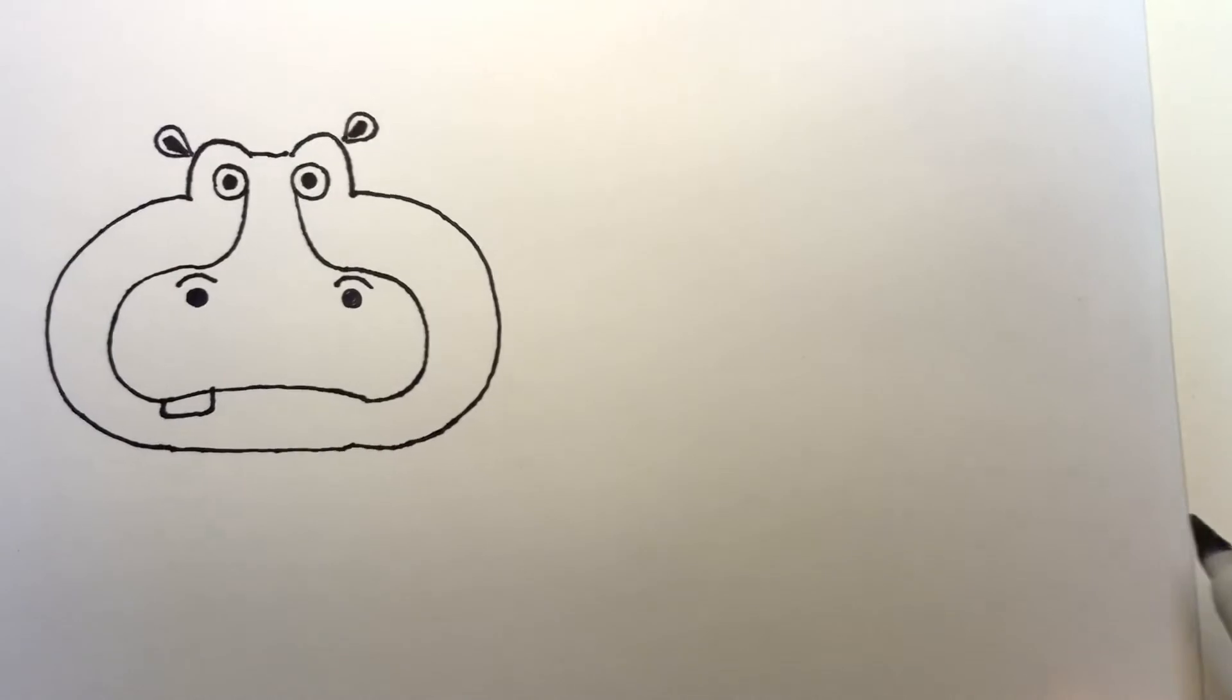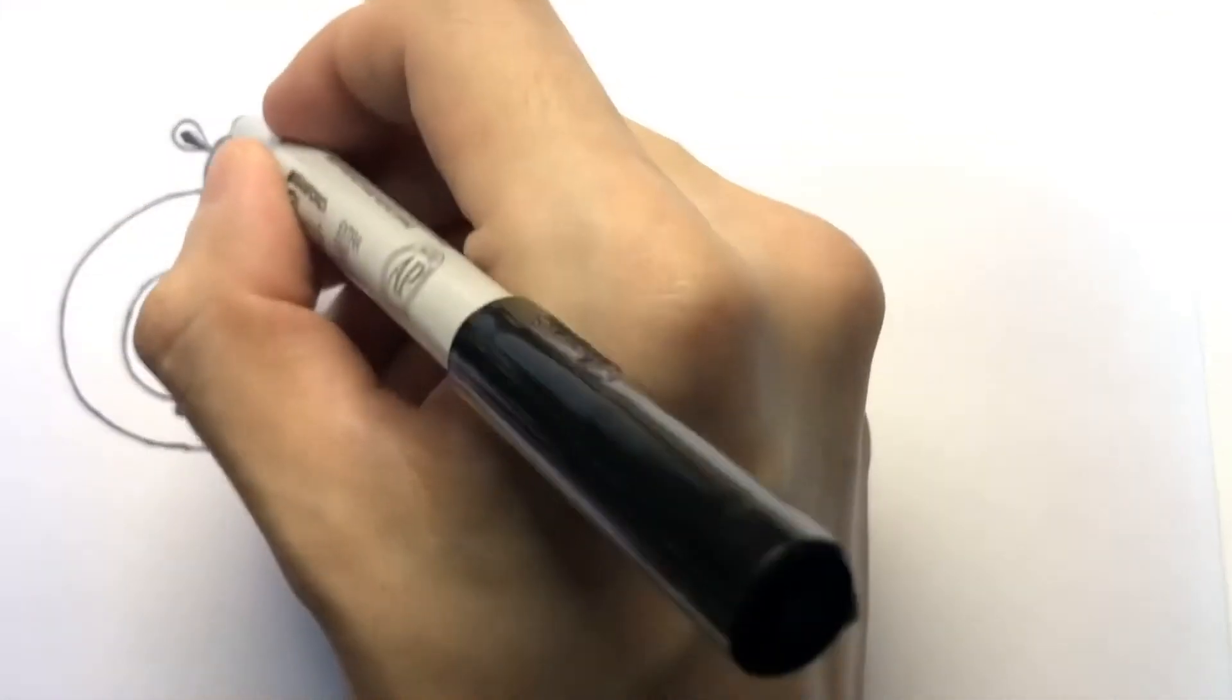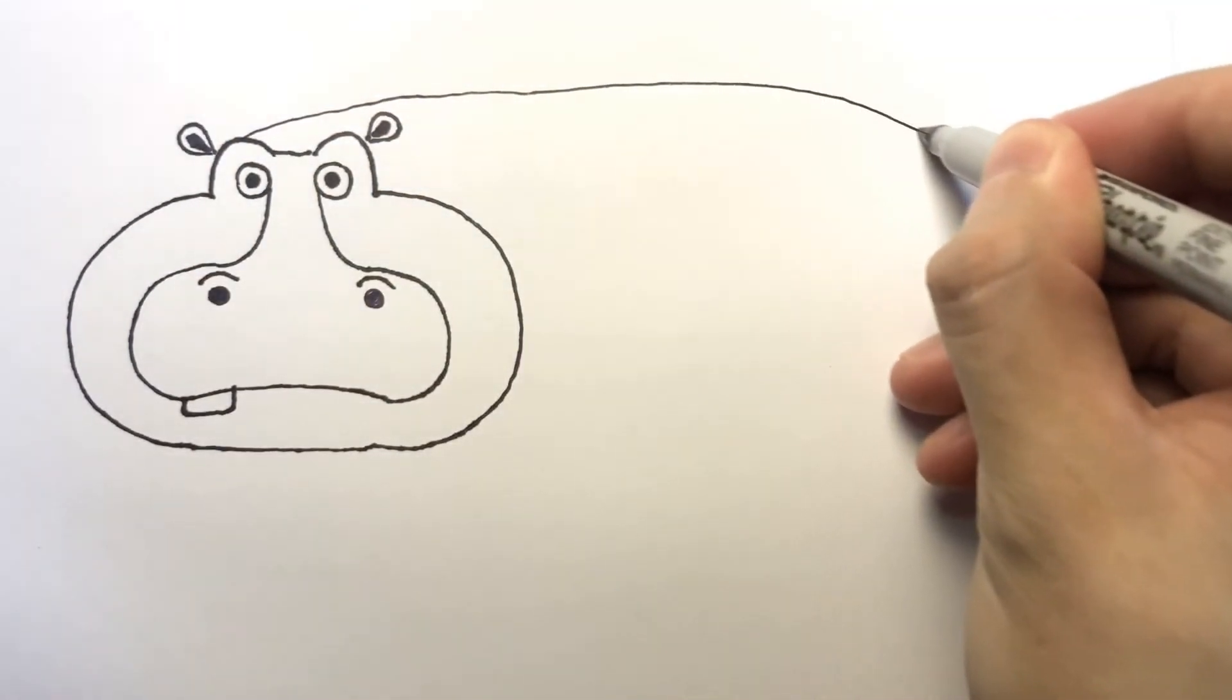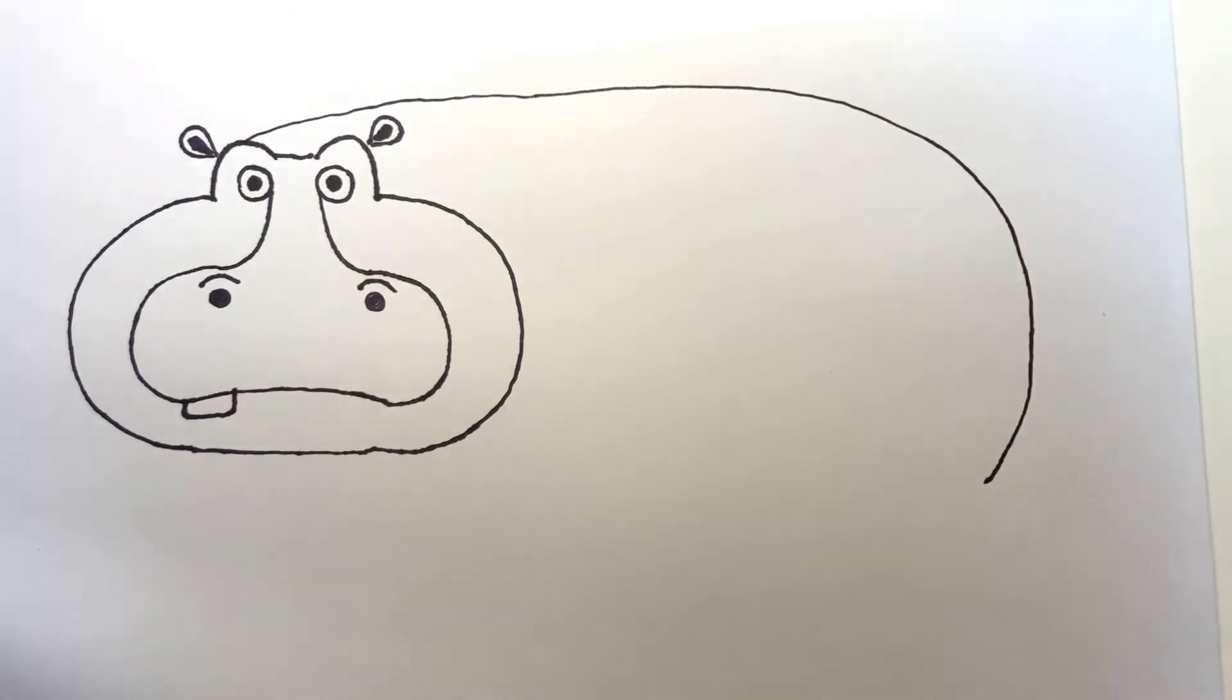And we're going to draw the body. Let's draw a long hill. It's going down like this, right?